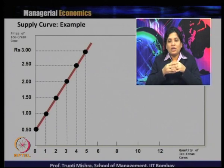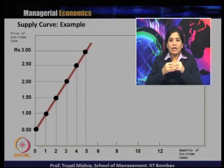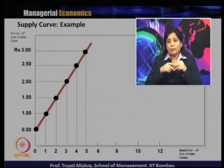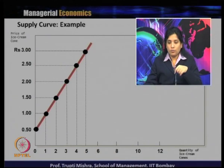As contrast to the demand curve, which is always downward sloping because of the inverse relationship between price and quantity demanded, in the case of supply there is always a positive relationship between price and quantity supplied. That is the reason the supply curve is always upward sloping and has a positive slope.